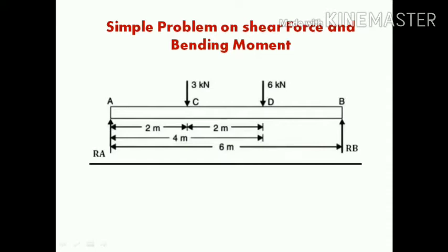First, we know that the total reactions of the beam are Ra and Rb. Ra plus Rb equals 3 plus 6, which means Ra plus Rb equals 9 kilo newtons. This is Equation 1.